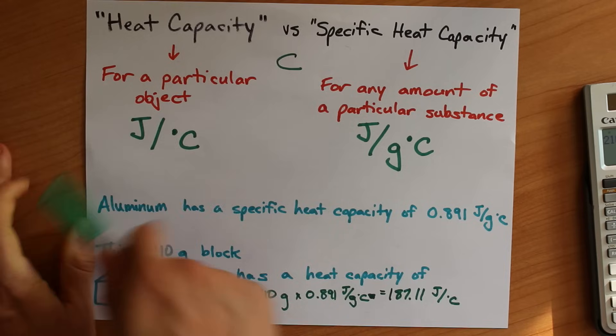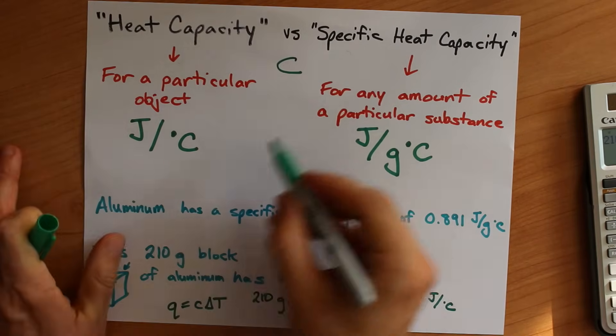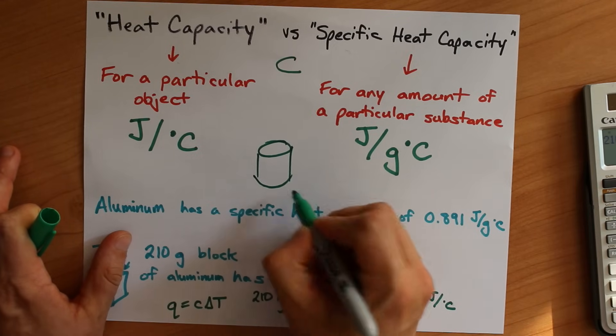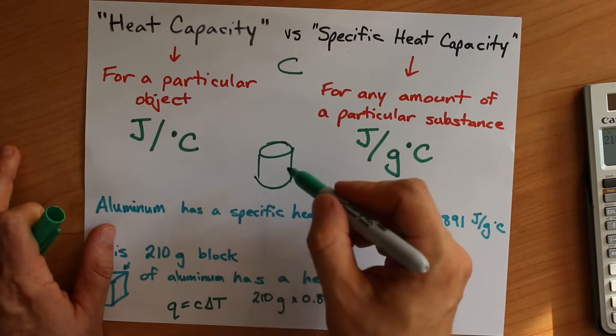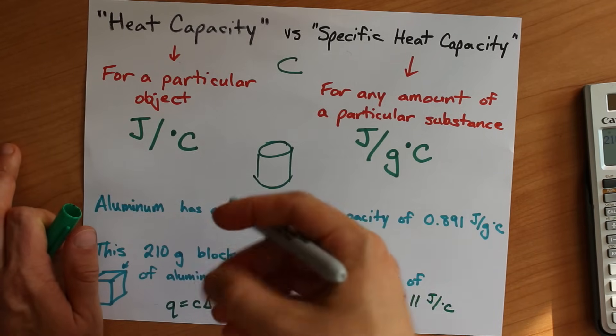The reason heat capacity exists at all is because chemists have calorimeters that they do chemical reactions in, and the canister or the bomb calorimeter or whatever that they're using doesn't just change.